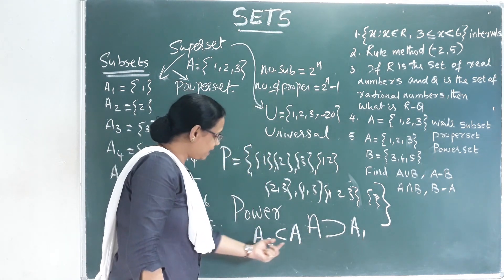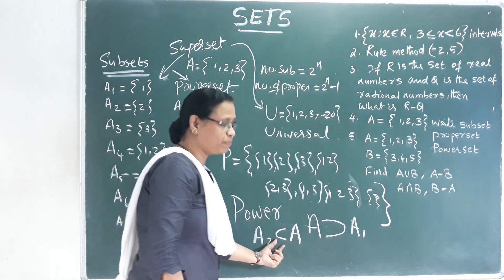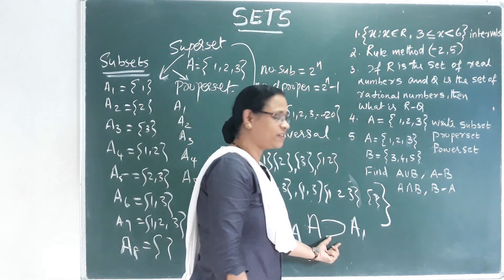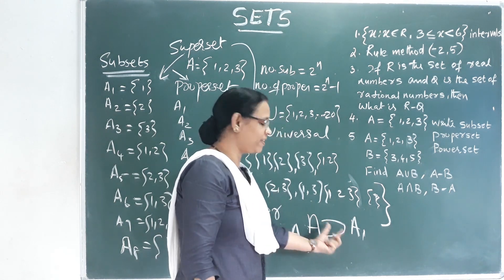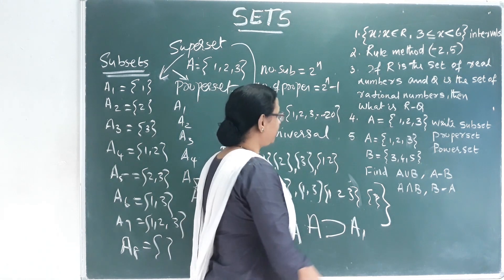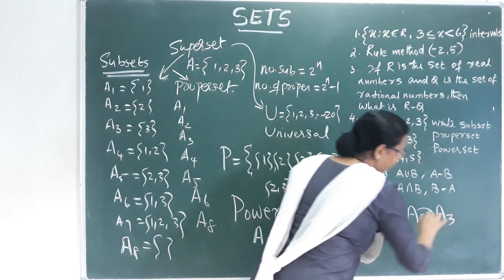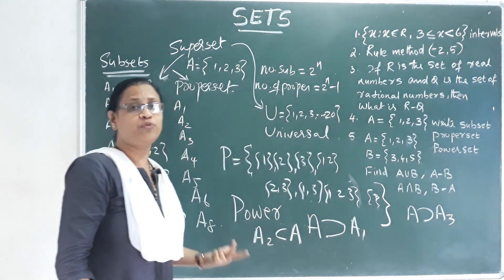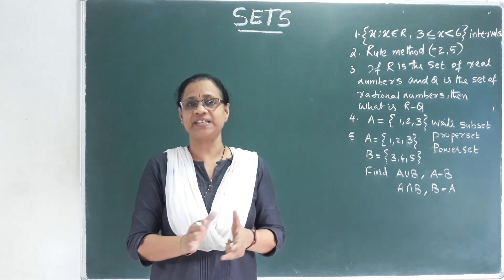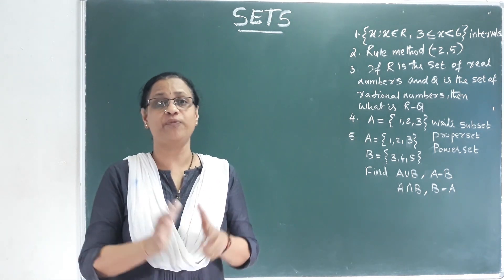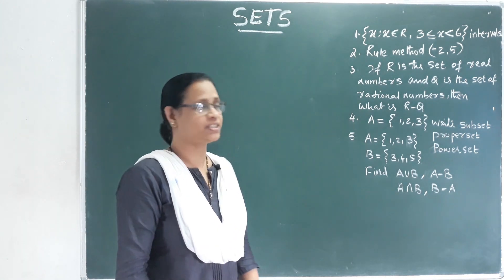A2 is the subset of A. Then, the subset of the subset is the subset. What is the subset of A2? It is the subset of A2. A is the subset of A3, A is the subset of A5. A pictorial representation of a set is called a Venn diagram.